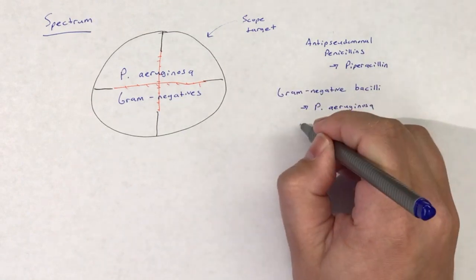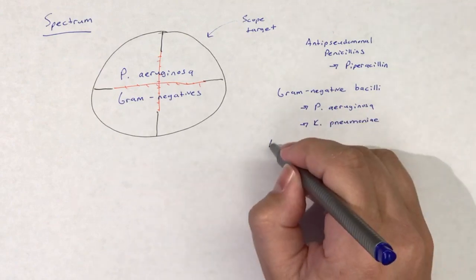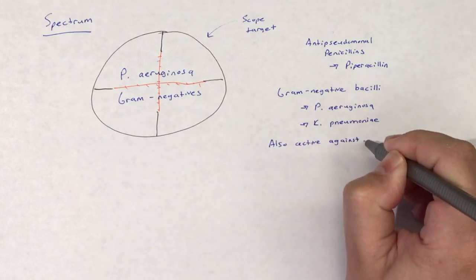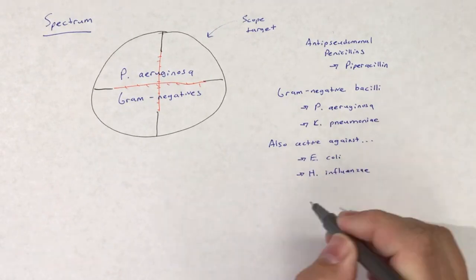Anti-pseudomonal penicillins, and specifically piperacillin, are active against many gram-negative bacilli, including P. aeruginosa and Klebsiella pneumoniae.